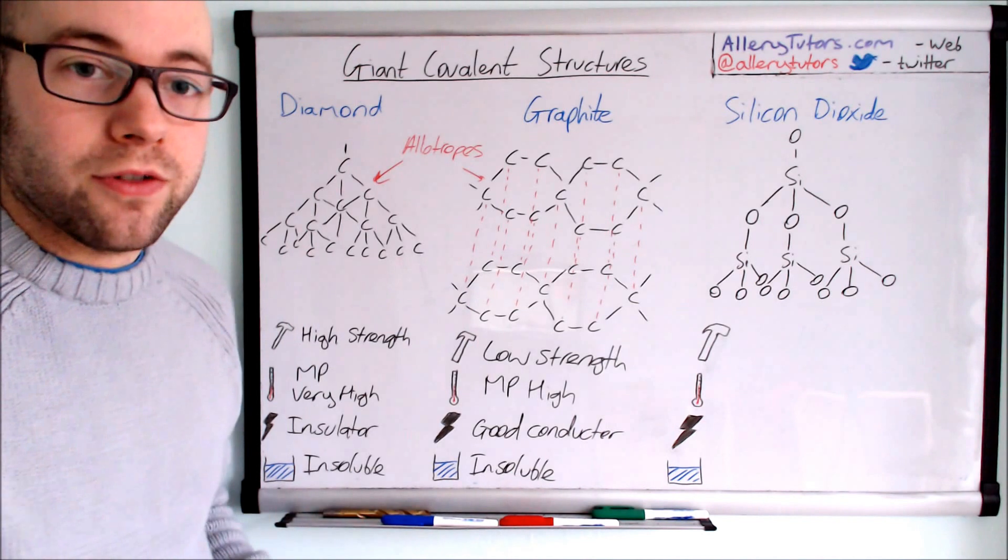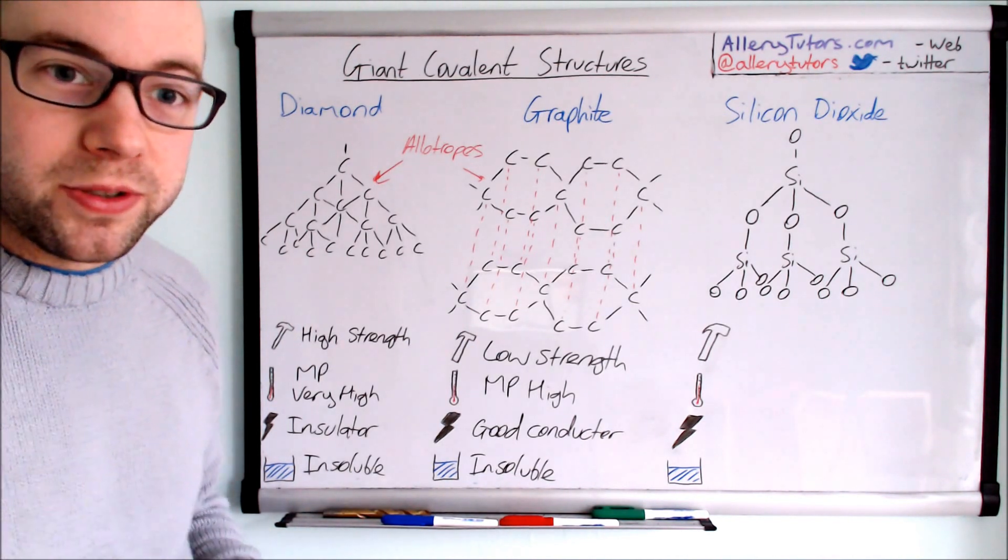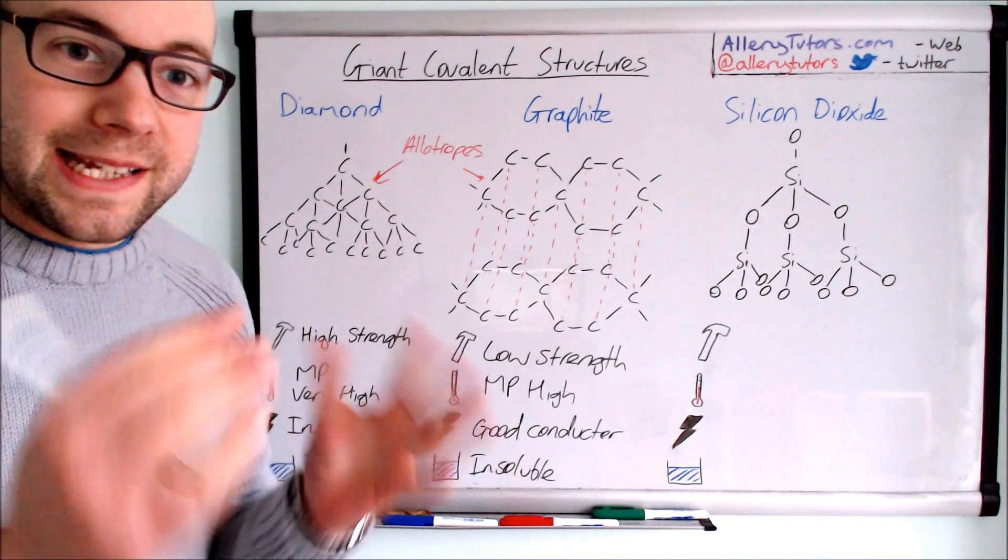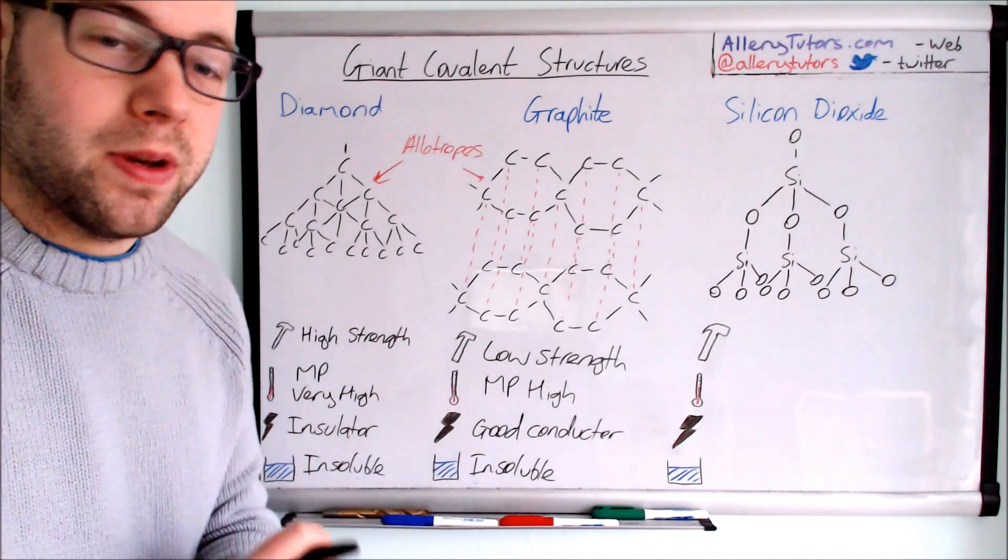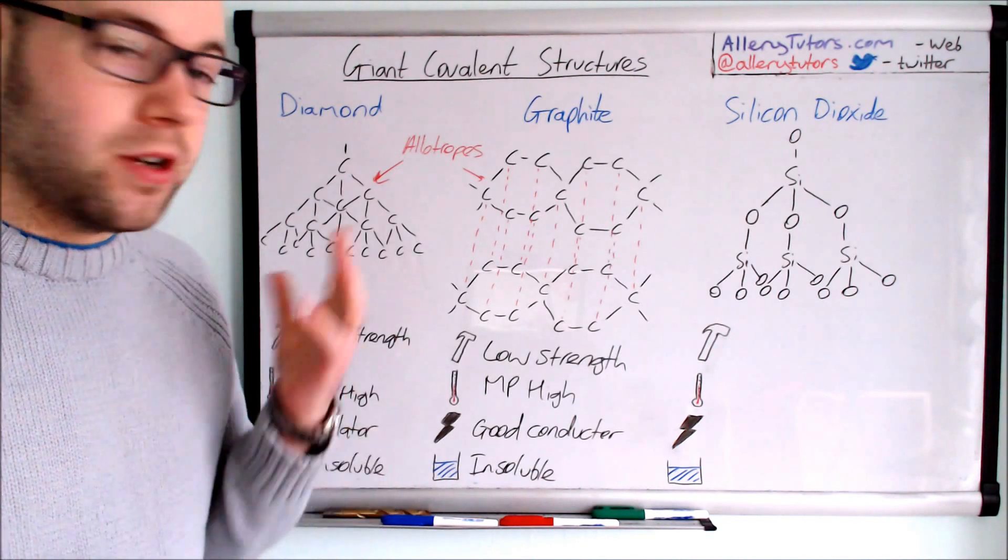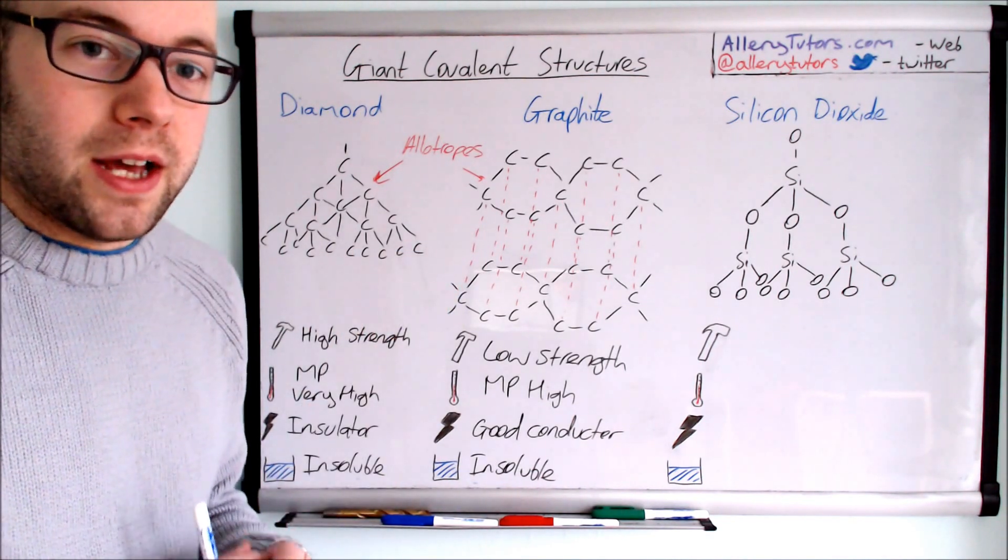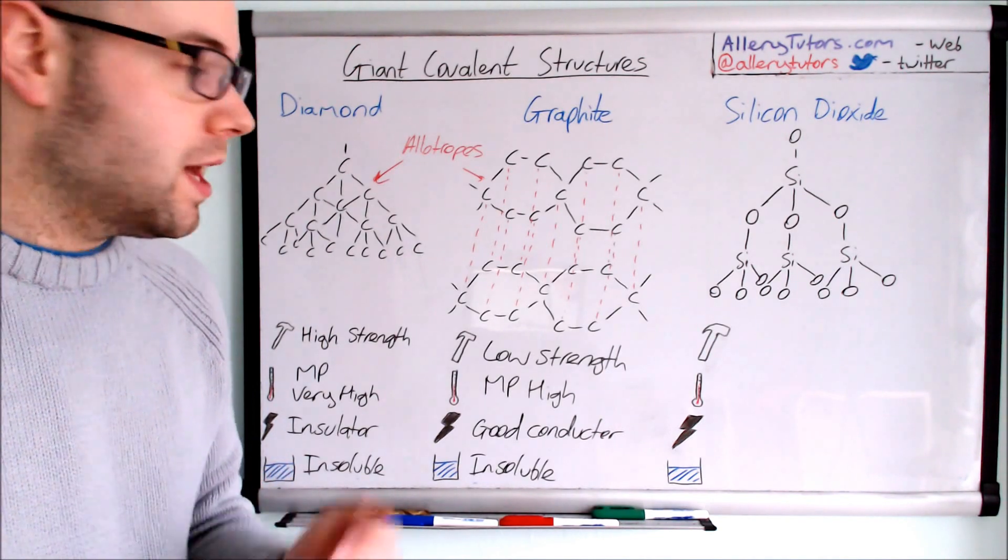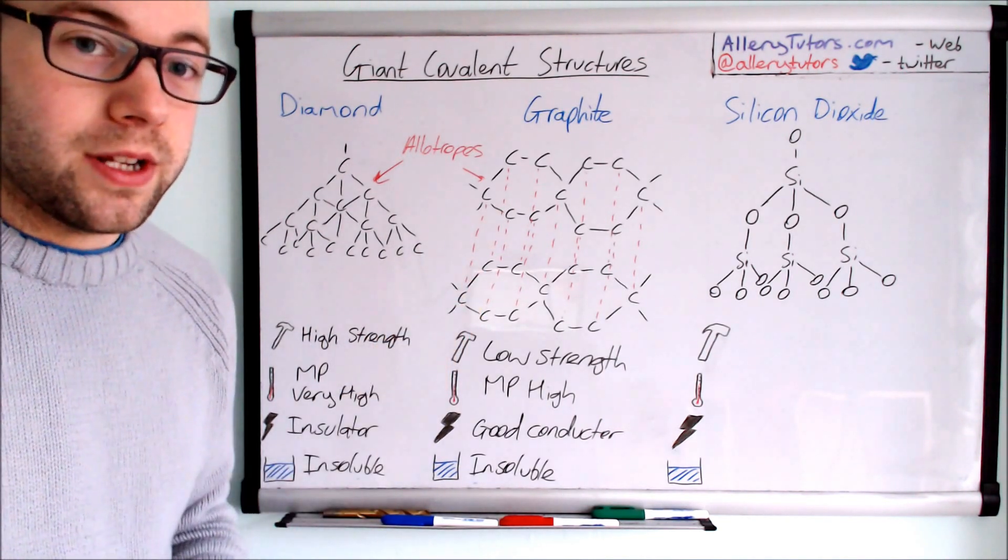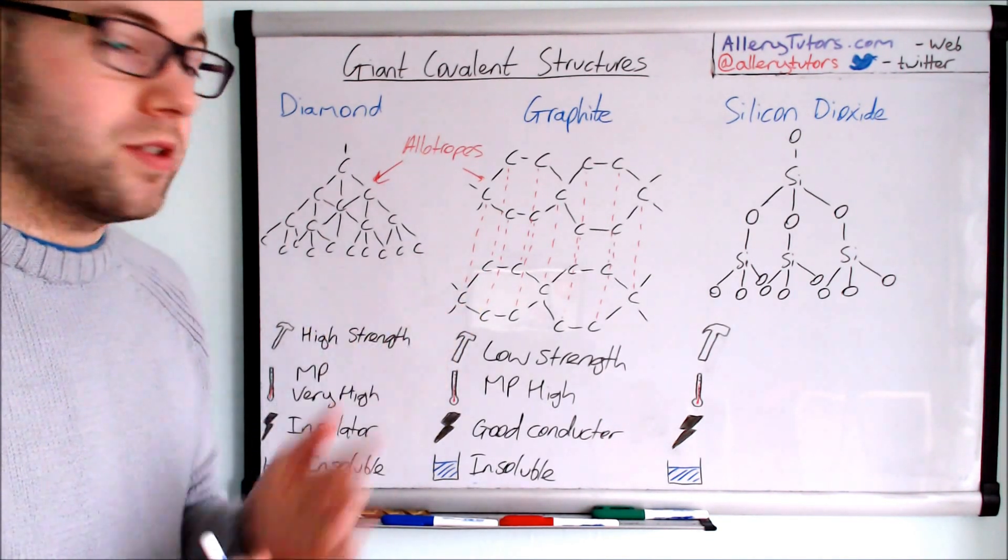The extra electron that's left behind on the carbon atom in the outer shell is actually being donated into the delocalised system in the middle, so that allows the layers to slide. There's another allotrope of carbon called Buckminster fullerene or buckyballs, which are C60. They've got 60 carbons in a spherical football shape. Superconductors that could be used in medicine to help release drugs in a very specific way, and also used in electronics.